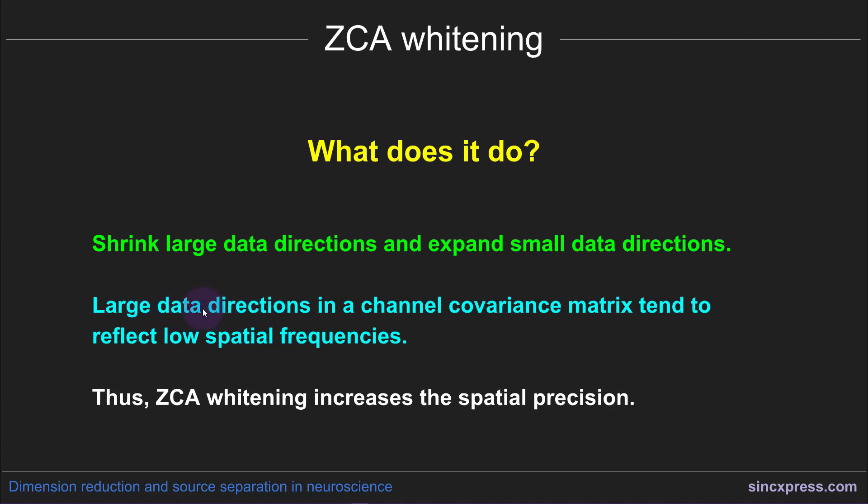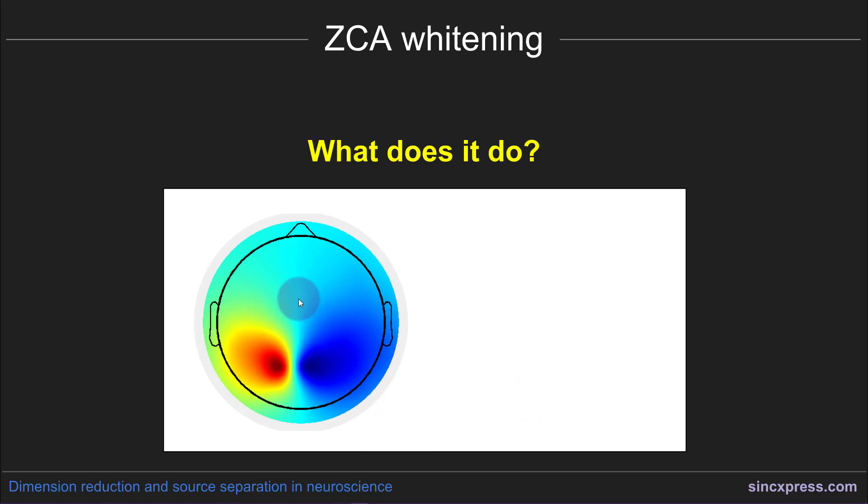so directions in the data space that are associated with large eigenvalues, they tend to have low spatial frequencies. And in contrast, directions of the data that have small associated eigenvalues tend to contain a lot of high spatial frequency activity. So therefore, this method of whitening is going to reduce the low spatial frequency information and increase, relatively increase, the high spatial frequency information. That means that ZCA whitening will increase the spatial precision of the results. So let me show you a practical example of this.